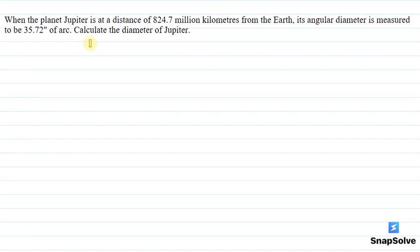Hello everyone, I am your teacher for this question. The question says that when the planet Jupiter is at a distance of 824.7 million kilometers from Earth, its angular diameter is measured to be 35.72 arc seconds. Calculate the diameter of Jupiter.